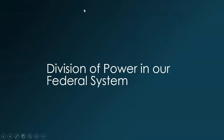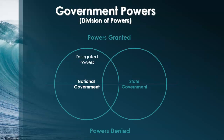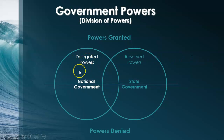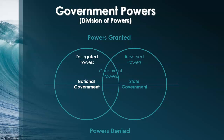Here are the divisions of power in our system. Delegated powers are the powers given to the national government — specifically delegated or stated in the Constitution — such as the power to declare war and the power to coin money. Reserved powers come from the 10th Amendment, which says that any power not listed in the Constitution is reserved for the states — things like issuing driver's licenses and certifying teachers.